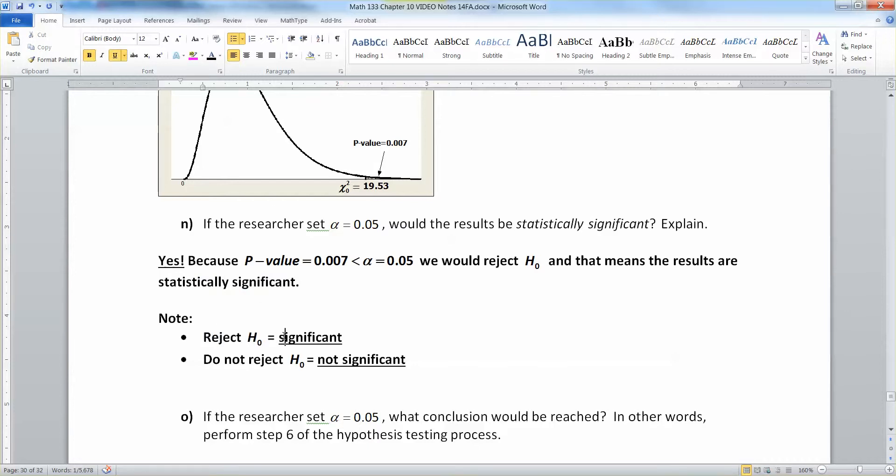Just one last reminder, when you reject H0, that means statistically significant. When you do not reject H0, that means not statistically significant. Of course, that's not practical significance. We have no idea whether or not the difference here is a big deal. That's practical significance. Like, real life, did this have a big effect? But we know statistically it had a big effect.